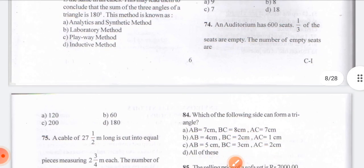Coming to question number 74: an auditorium has 600 seats. One third of the seats are empty. The number of empty seats are — so 1/3 of 600 is 200.